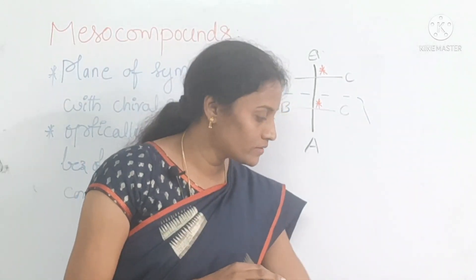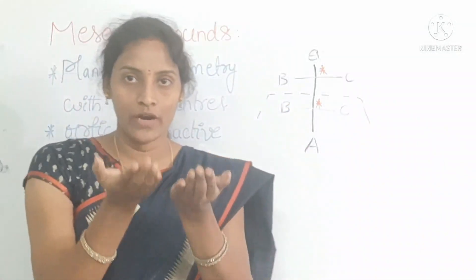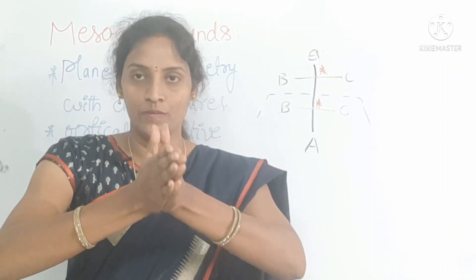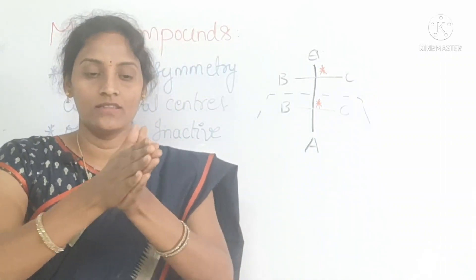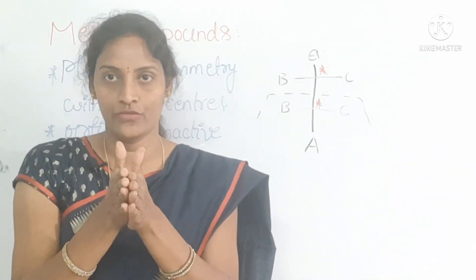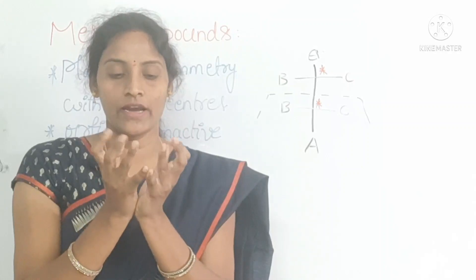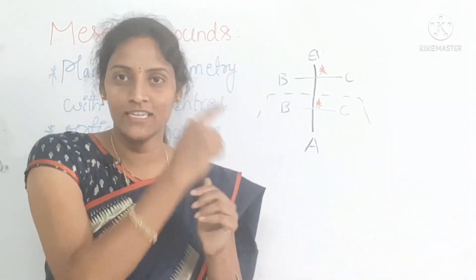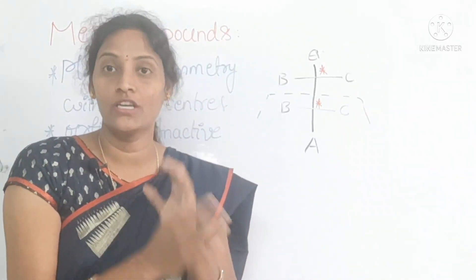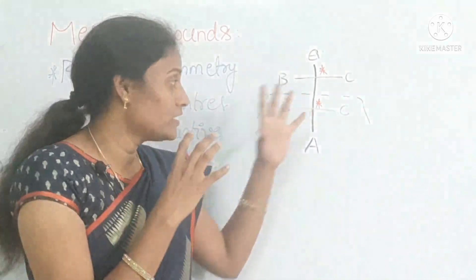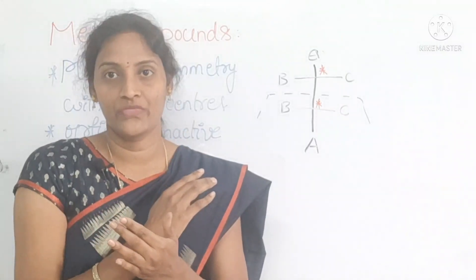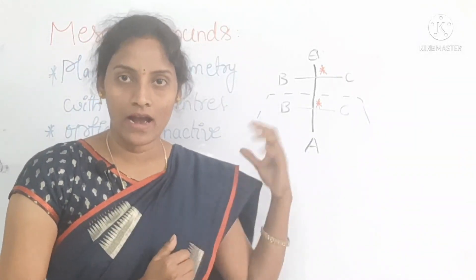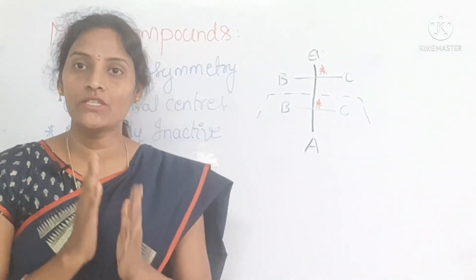In another way, just imagine students: suppose you take that molecule in your hands and try to fold it like this. This is one equal half and this one is another equal half. This finger touches with this one, and in the similar way, this molecule also — A touches with that A, C touches with another C, B touches with another B. So those two parts are equal in nature. Because of this, the complete molecule or isomer is showing meso in nature, or it comes under a meso compound.